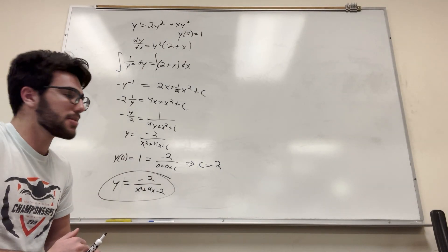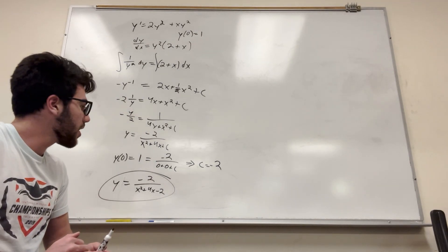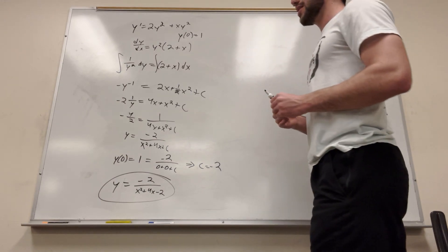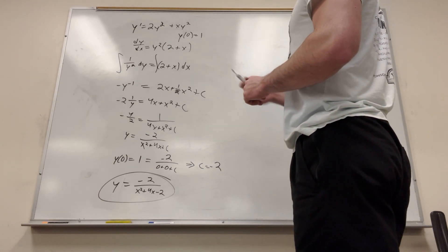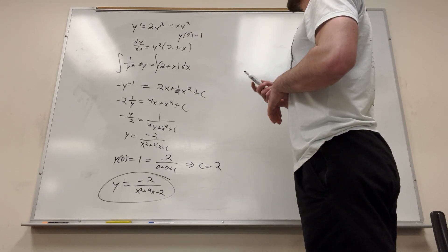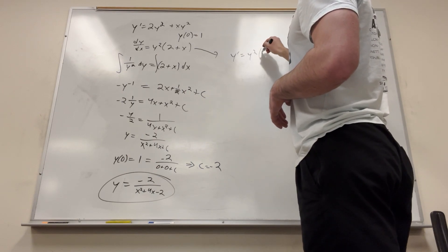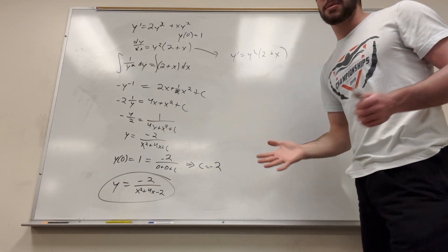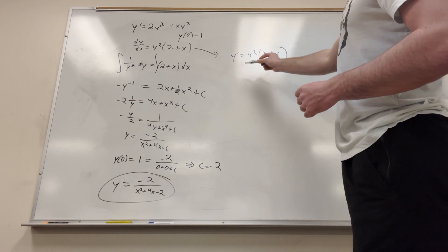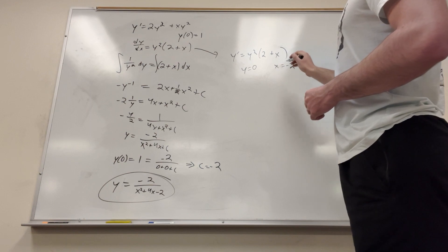Now we want to find out where it obtains its maximum value. To do that, we look at y prime, just like we did Calc 1. Let's figure this out. Let's go back to this here. y prime is equal to y squared 2 plus x. So of course you're going to know where a maximum or minimum value is by finding where the derivative is equal to 0. So that means that y is equal to 0 as a point or x is equal to negative 2.